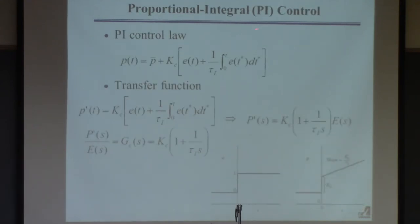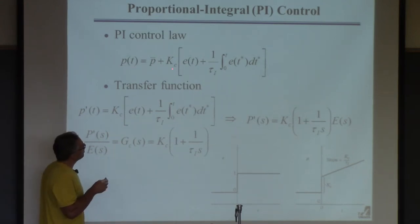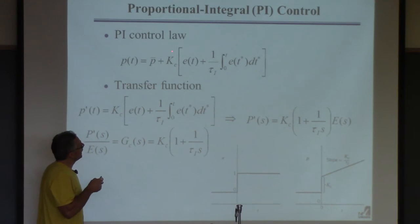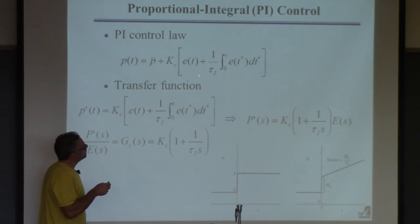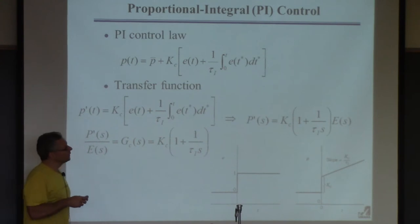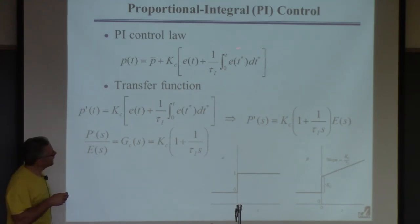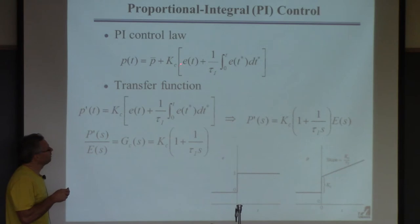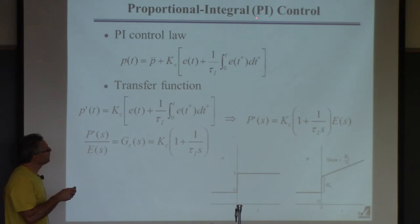PI control is the most common form of control in the world. The output of the controller has a proportional part and an integral part. It has two tuning parameters: the controller gain KC, which multiplies both the proportional and integral parts, and the integral time τI, which weights the integral part. A small τI gives more weight to the integral term; a large KC increases the proportional response.